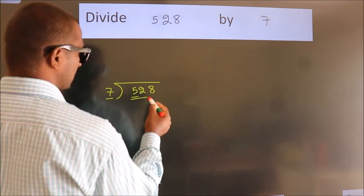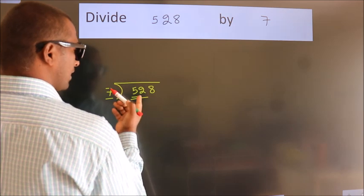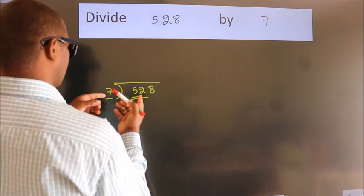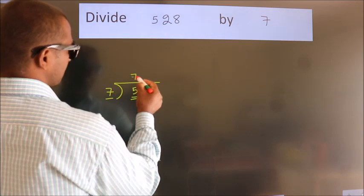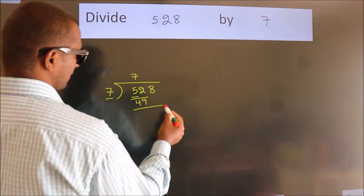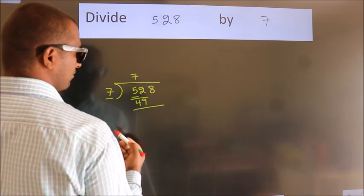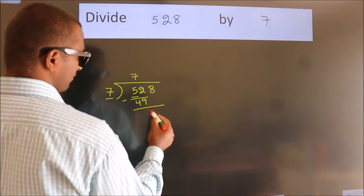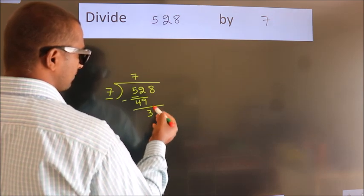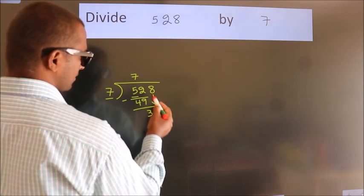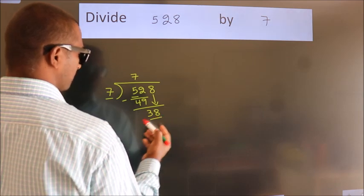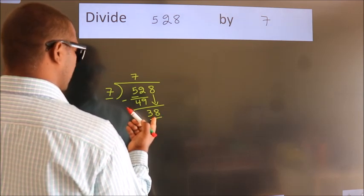A number close to 52 in the 7 times table is 7×7=49. Now we subtract: 52 minus 49, we get 3. After this, bring down the beside number — bring down 8 — so we have 38.